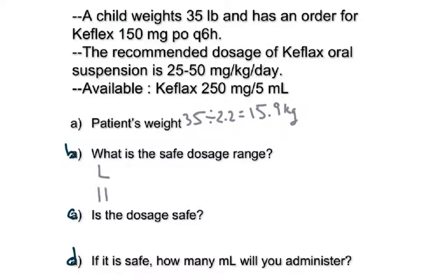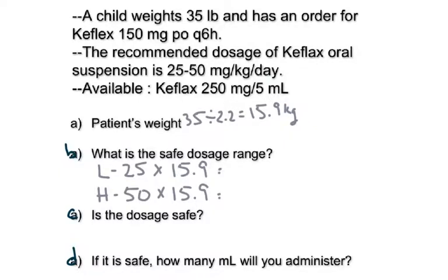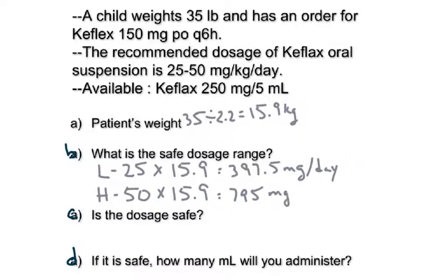For the safe dose range, the low is 25 and the high is 50. Multiply both by his weight of 15.9 kilograms. 25 times 15.9 gives 397.5, and 50 times 15.9 gives 795. Since this is a dosage calculation, we do not round — leave it as is unless told otherwise. The units are milligrams per day.